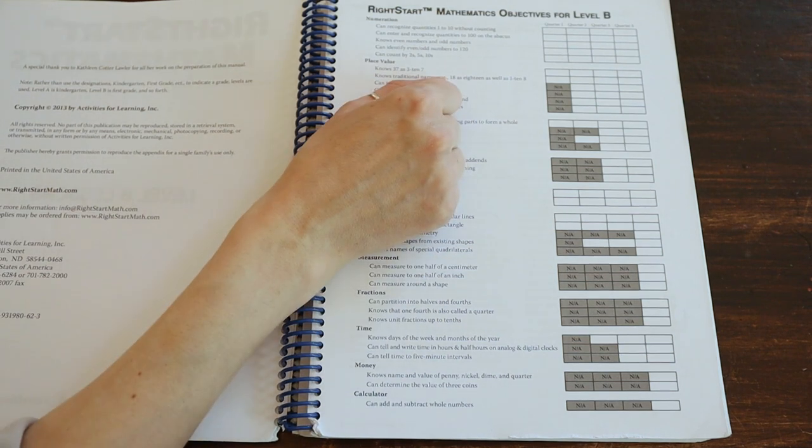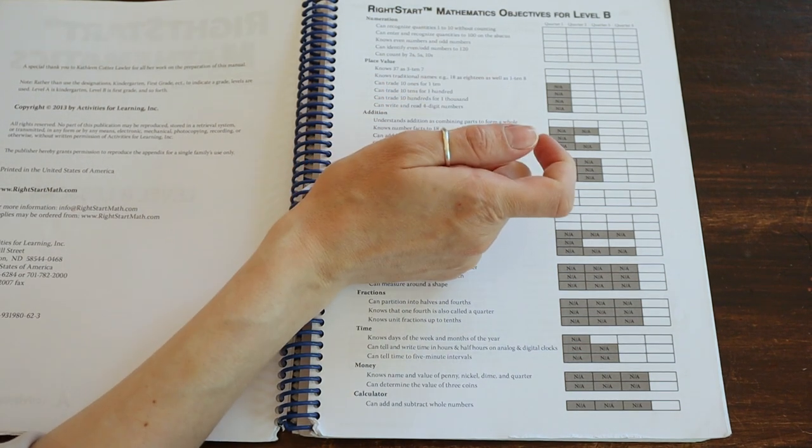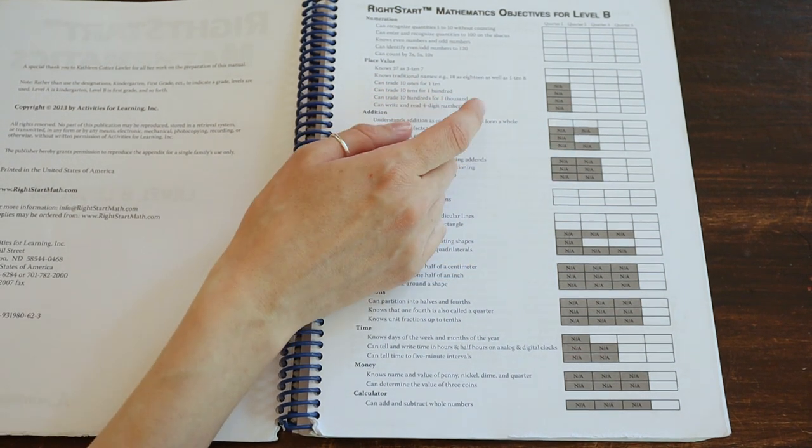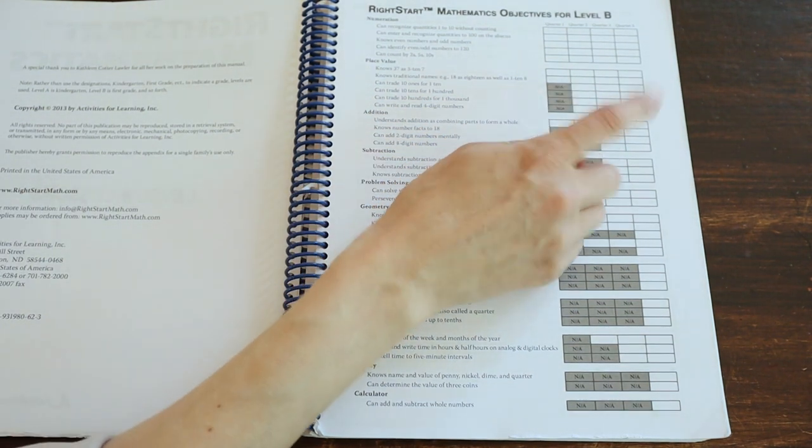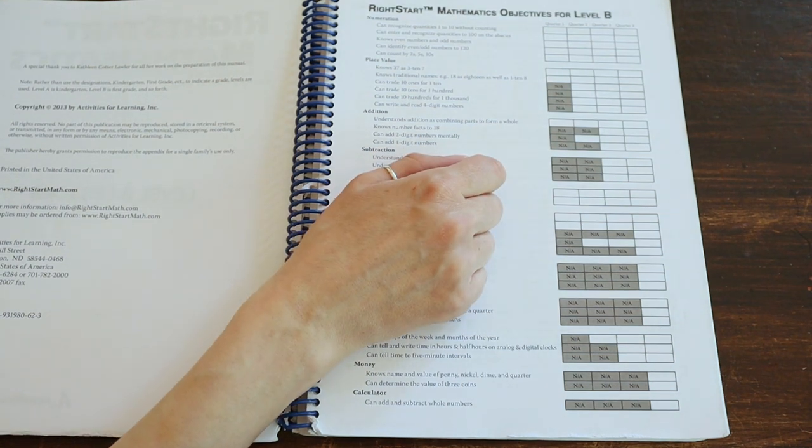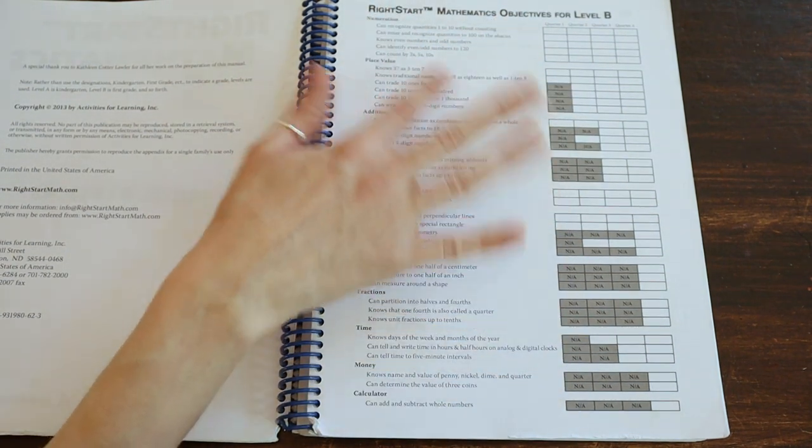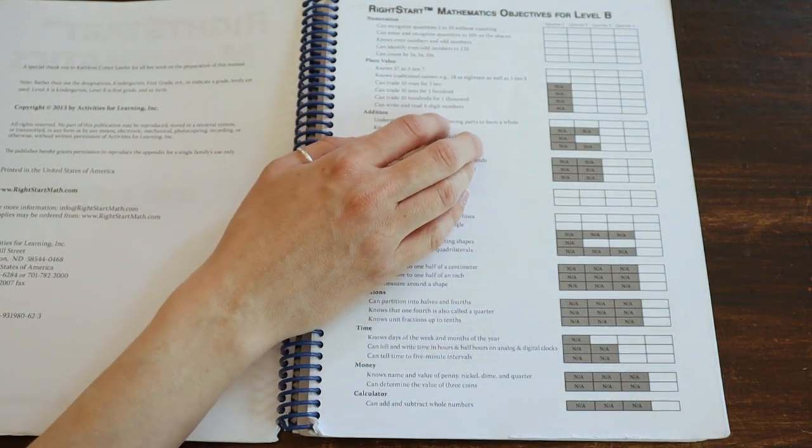This mostly is a reference guide so you can refer back to, okay, I need to talk about place value a little bit more or where can I find about trading 10s for 100 or whatever. And you can say, oh okay, well we started talking about it in quarter 1. Otherwise, this doesn't really tell you very much.